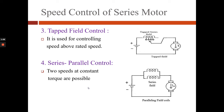Now we will see tap field control. As we move the selector switch from position 1 to 3 and so on, the number of turns of the field winding reduces, which reduces the MMF. Since phi is proportional to MMF, the flux decreases. As flux decreases, speed increases, so the motor speed increases as we move from position 1 to 5. In series-parallel control, two speeds at constant torque are possible.